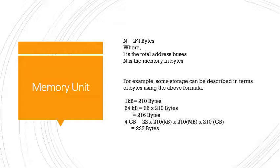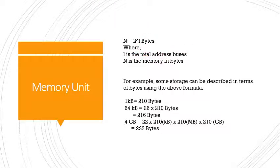In memory organization, there are 2 to the power L memory locations indexed from 0 to 2 to the power L minus 1, where L is the address bus. We can describe the memory in terms of bytes using the formula N equals 2 to the power L bytes, where L is the total address bus and N is the memory in bytes.